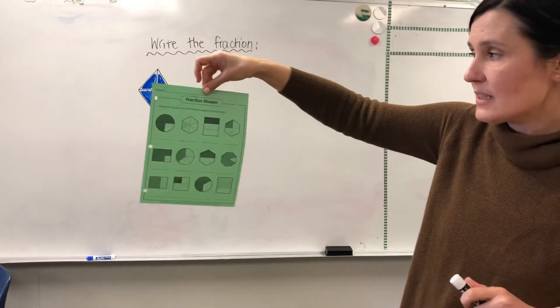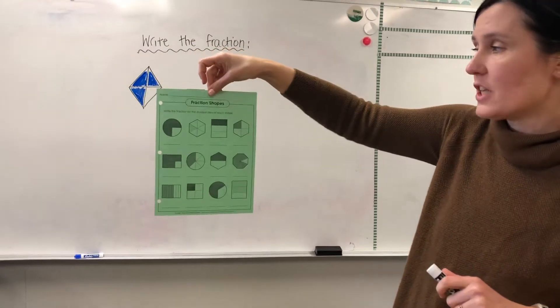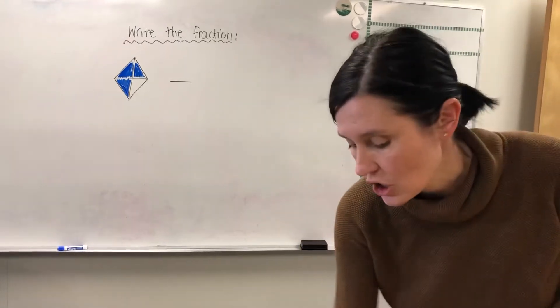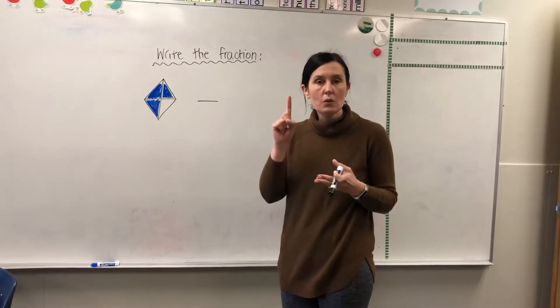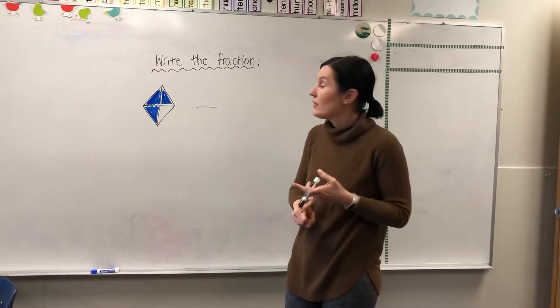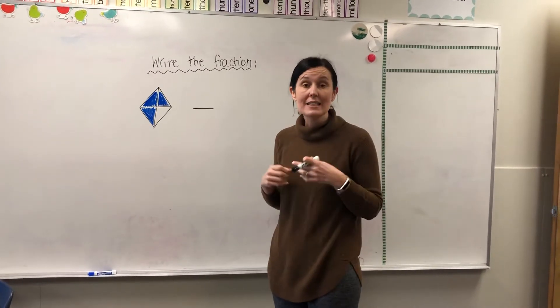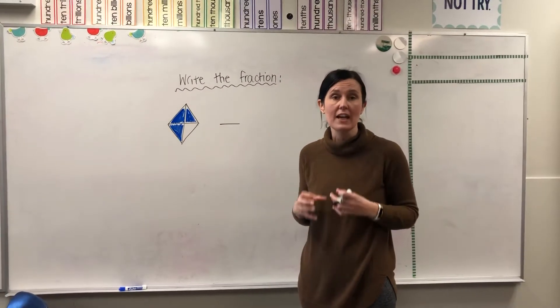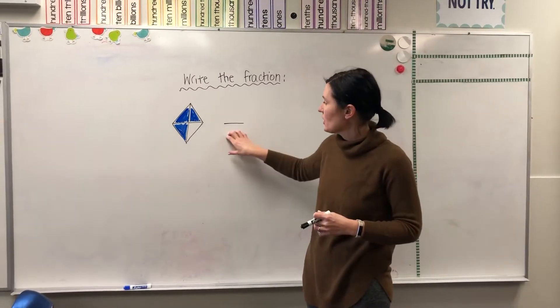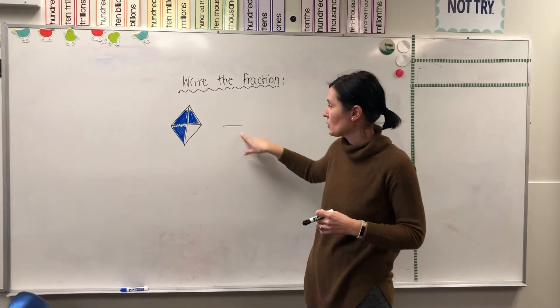are shaded in and you're being asked to write the fraction for the shaded area of each shape. So we know we need a numerator and we know we need a denominator. The denominator is the number that tells us how many parts the shape is divided into, so let's do the denominator first, the number that goes on the bottom.